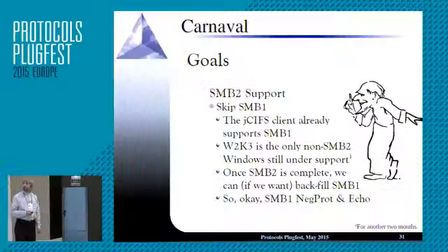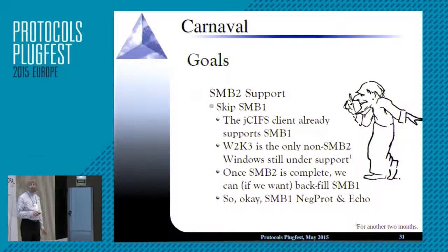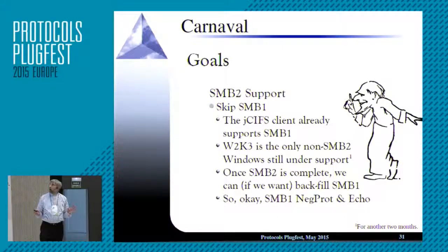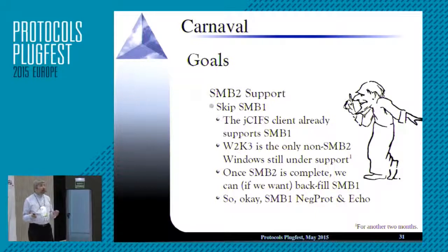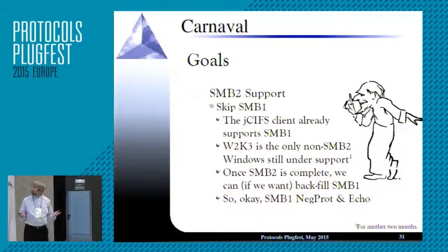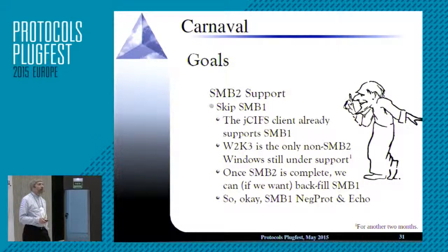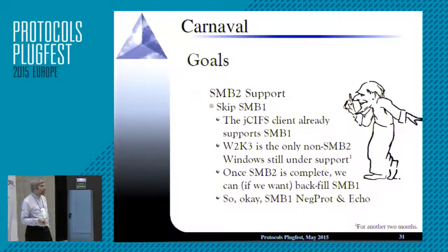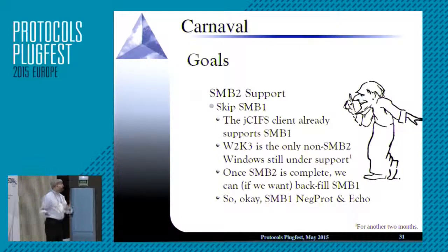Here are our goals: SMB2 support. We're going to skip SMB1 — JSIFS already has SMB1 covered. Windows Server 2003 is the only Windows still under support that has SMB1 only, and that's going out of support in July. SMB1 is going bye-bye as far as the Windows world is concerned. So why would we spend time right now doing SMB1 work when we don't have a complete product anyway? When we get SMB2 complete, if there's still a desire for SMB1 support, we can backport it in.